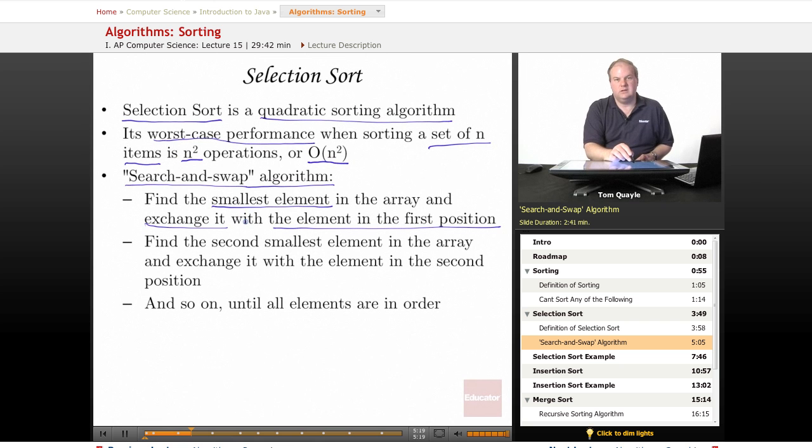This is assuming that we're sorting in ascending order, which is by far the most common order. The smallest element in the array should go in the first position in the array. Now technically that's position number zero, but I'm going to refer to it as the first position in the array because that's the terminology that makes the most sense to the most people. So the smallest element belongs in the first position.